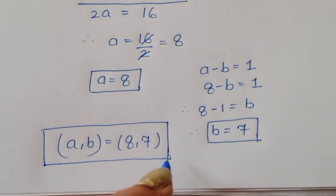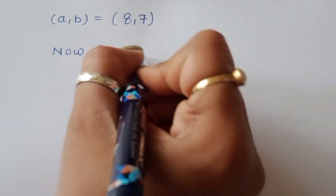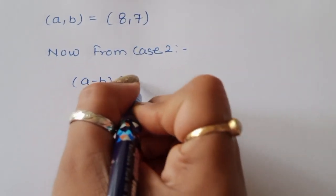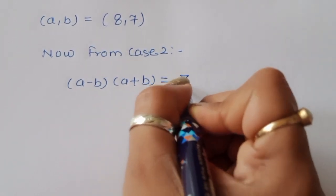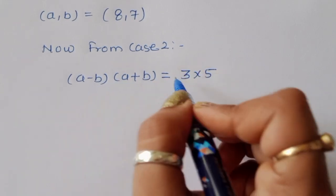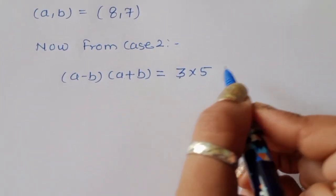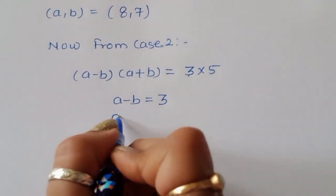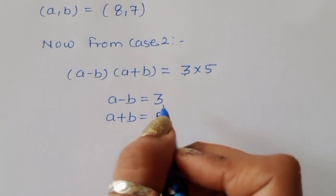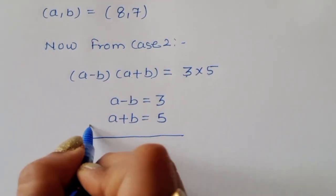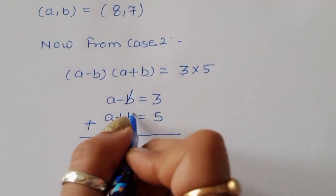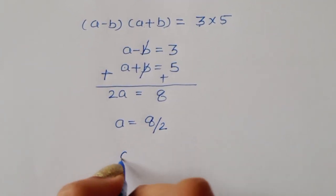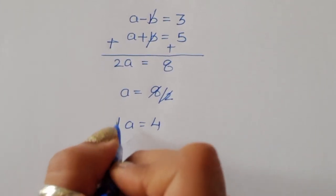From case 2, A minus B times A plus B is equal to 3 times 5, which is 15, where A minus B is less than A plus B. So A minus B is equal to 3 and A plus B is equal to 5. Adding these two equations: 2A equals 5 plus 3, which is 8. Therefore A is equal to 8 divided by 2, which is 4.